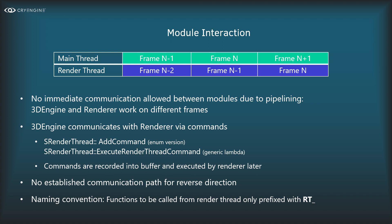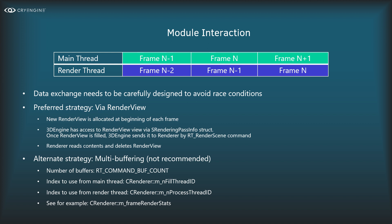There is no established communication path for the reverse direction. If the renderer needs to tell something to the 3D engine, it's kind of an ill-posed problem — you'd be sending data from the past into the future. If the renderer thread were in frame N-1, the data would arrive in frame N+1, so there's a two-frame difference. That's something we generally don't do.